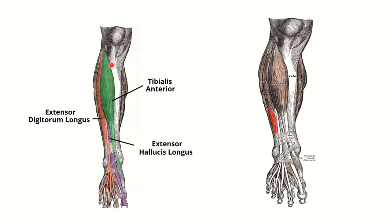You can see here: this is the anterior compartment, and lateral to the anterior compartment there is the lateral or peroneal compartment. In the anterior compartment, we can see — this is the knee joint, this is the ankle joint and foot. This is the anterior border or shin of the tibia. The first muscle here is tibialis anterior, the second is extensor hallucis longus, and the third is extensor digitorum longus.